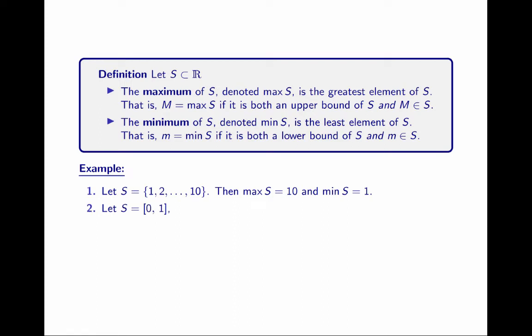The maximum is 10. The minimum is 1 — fairly straightforward. The closed interval 0 to 1: all numbers greater than or equal to 0 and also less than or equal to 1. The idea of closure has a specific meaning we'll explore later in the semester. The maximum is 1 — 1 is greater than or equal to every element in the set and is in the set. And 0 is less than or equal to every element in the set, and 0 is also in the set.